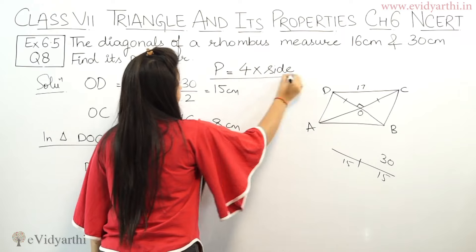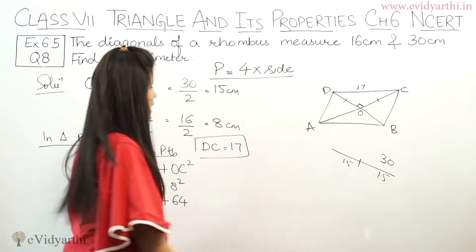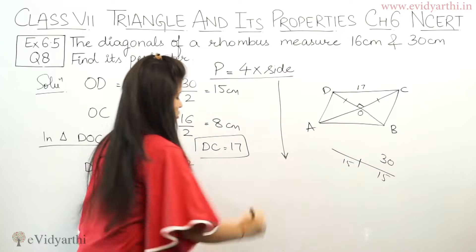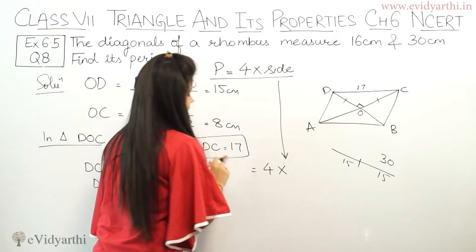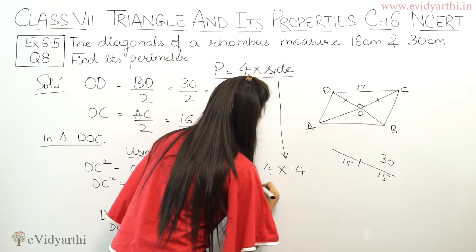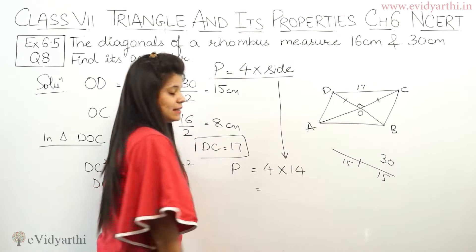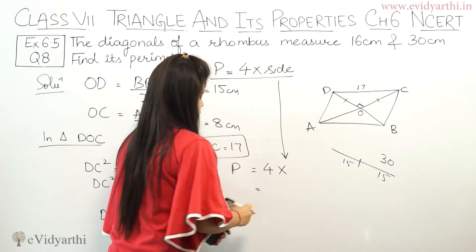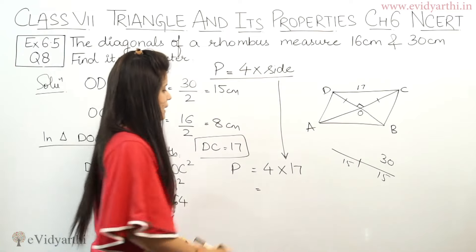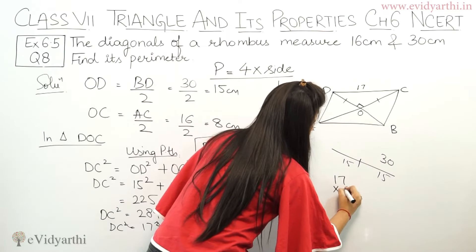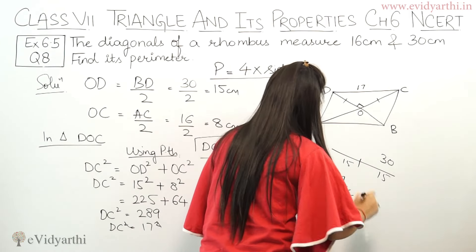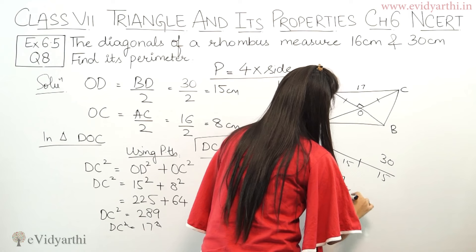Now let's apply the perimeter formula. Perimeter of the rhombus equals 4 times the side. The side is 17, so perimeter equals 4 multiplied by 17. 4 times 17 gives us 68 cm.